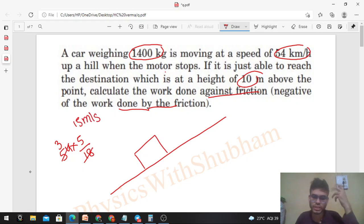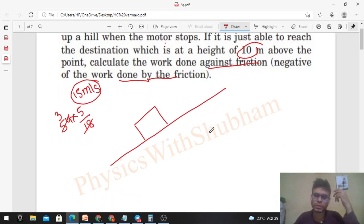Now how many forces are acting at this point when the motor stops? One force is mg vertically downward. There will be normal reaction by the hill, and there will be force of friction in the backward direction to oppose the relative motion of the car with the road on which it is moving.